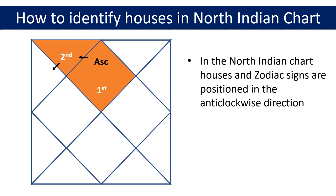Continuing to move in the anti-clockwise direction, the third house is the triangle next to the second house as highlighted on the screen. This will always be the position of the third house in any North Indian chart as the houses are fixed. Moving in the anti-clockwise direction we come to the fourth house, which is the diamond shaped rectangle highlighted on the screen. This is the position where you will always find the fourth house in the North Indian chart.